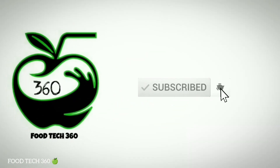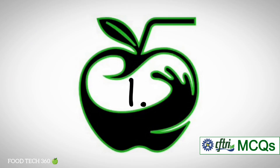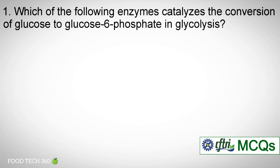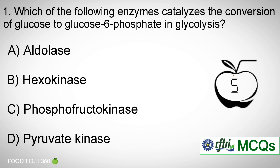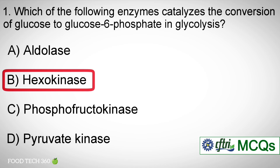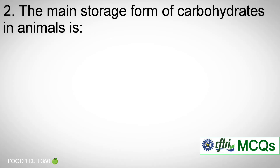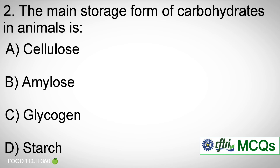Without any further delay, let's get started. Question number one: which of the following enzymes catalyzes the conversion of glucose to glucose-6-phosphate in glycolysis? Options: a) Aldolase, b) Hexokinase, c) Phosphofructokinase, d) Pyruvate kinase. Correct answer: b) Hexokinase.